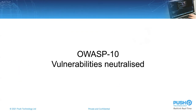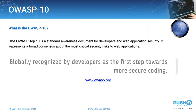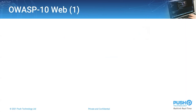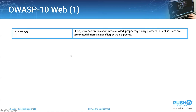Moving on, we're going to look at the OWASP 10 and the vulnerabilities it has highlighted, and how Diffusion can neutralize those. So first of all, what is the OWASP 10? It is a generally accepted consensus of the most important vulnerabilities to address when designing and building secure platforms. It's an open standard. There are two OWASP 10s — one for web applications, another for APIs. We're going to go through the web one and how Diffusion neutralizes each.